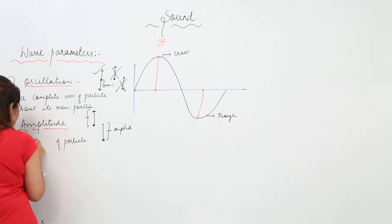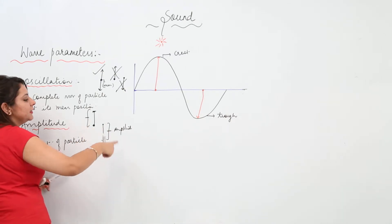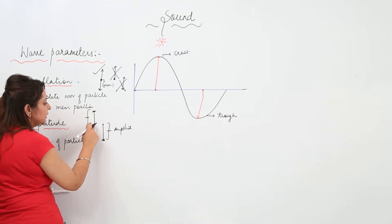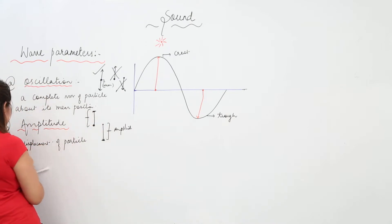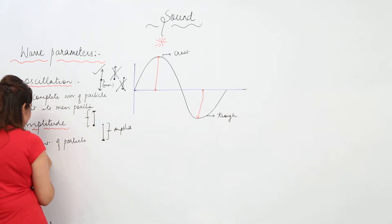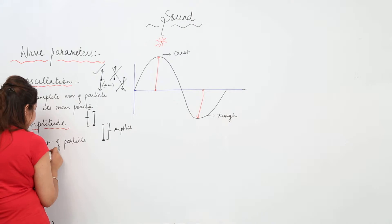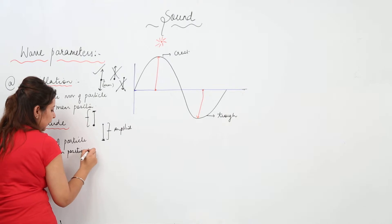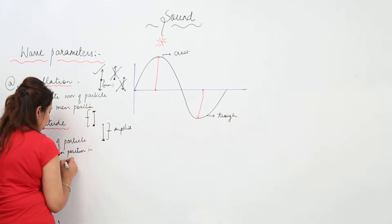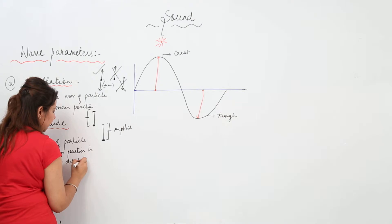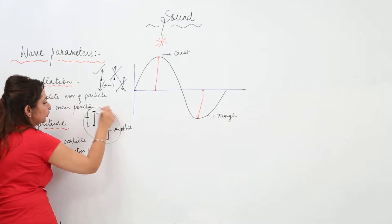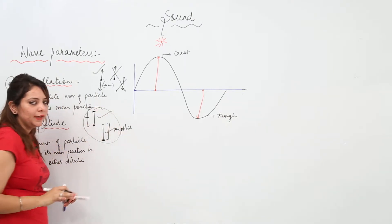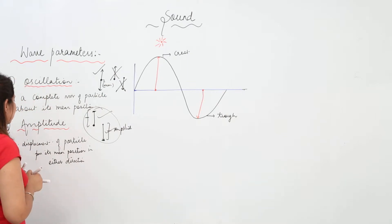Why do we use the term displacement? Because displacement is a distance in a specific direction. So amplitude is the maximum displacement of a particle from its mean position in either direction — whether upward or downward. You do not have to take both; we just need one distance, either up or down.